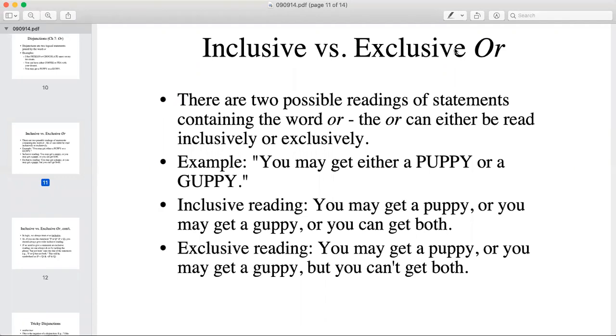For example, the statement you may get either a puppy or a guppy. The inclusive reading of this statement would be that you may get a puppy, or you may get a guppy, or you can get both. Whereas the exclusive reading says you may get a puppy or you may get a guppy, but you can't get both.